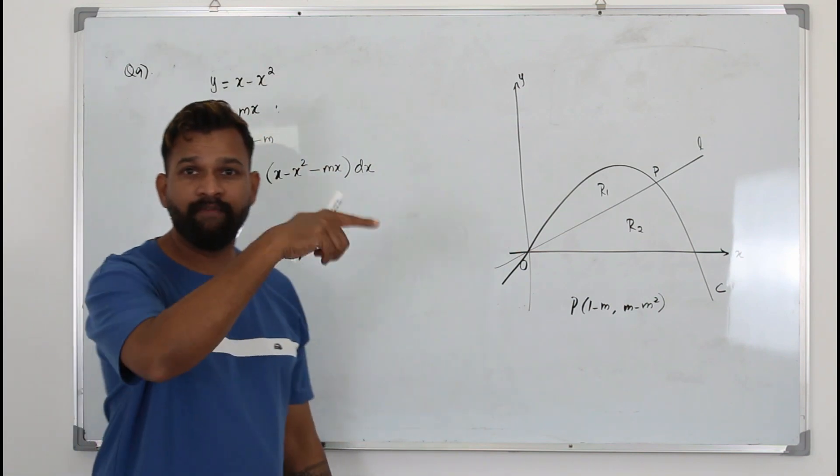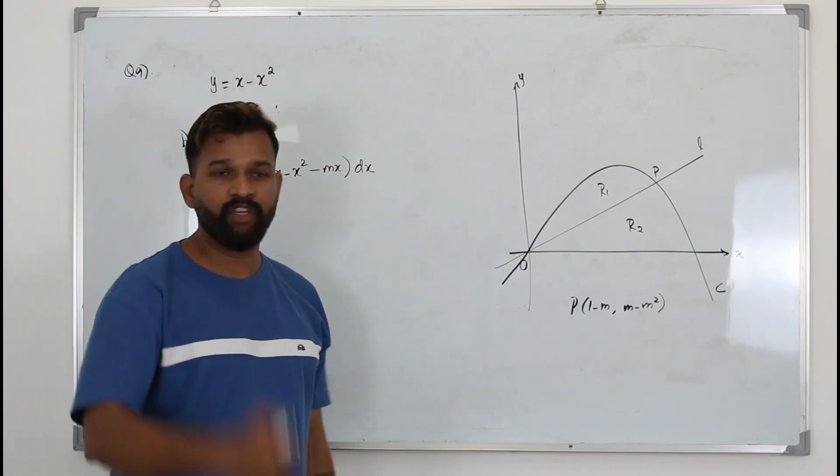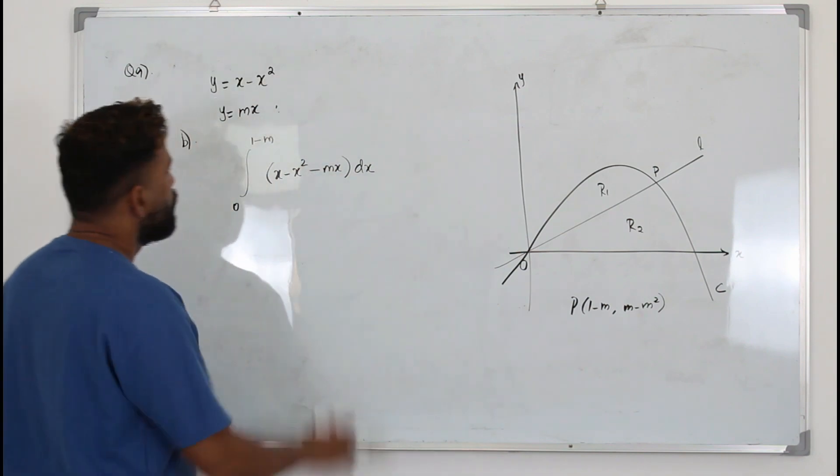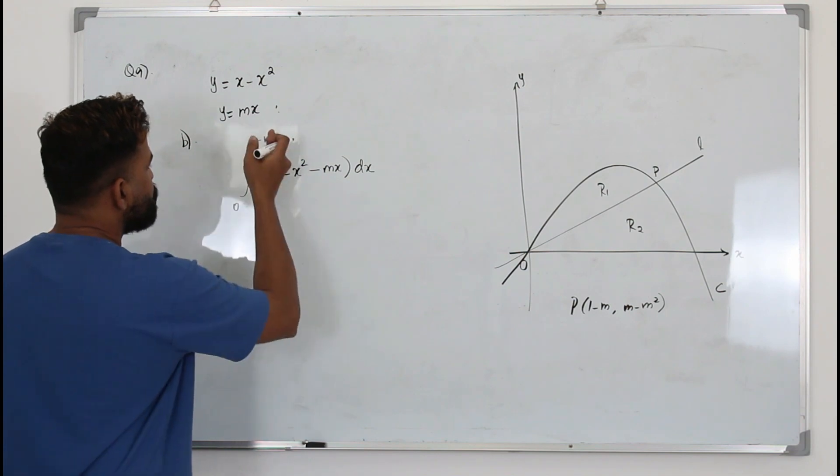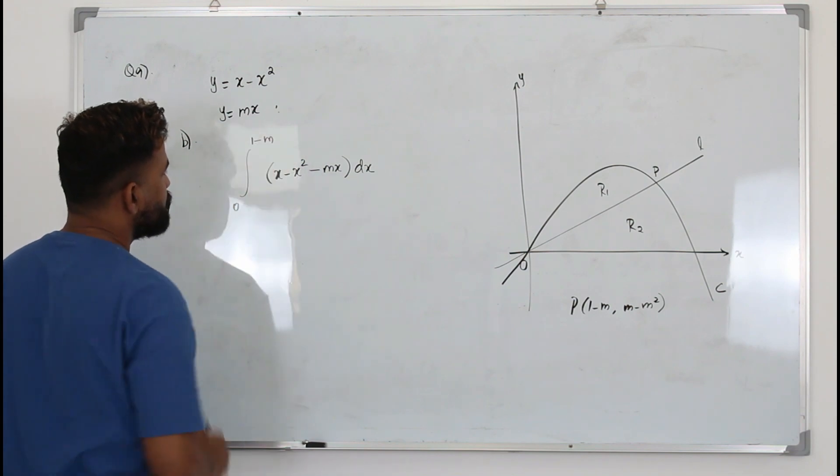The rule is: integral of f(x) minus g(x) dx, where the top function is x minus x squared and the bottom is mx. Now integrate this and substitute the limits.